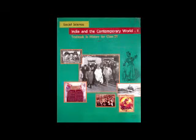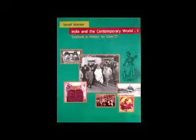France becomes a constitutional monarchy. The National Assembly completed the draft of the constitution in 1791. Its main object was to limit the powers of the monarch, separating powers and assigning them to different institutions — the legislature, executive and judiciary — making France a constitutional monarchy. The constitution of 1791 vested the power to make laws in the National Assembly, which was indirectly elected: citizens voted for a group of electors who in turn chose the assembly. Only men above 25 years of age who paid taxes equal to at least 3 days of a laborer's wage were given the status of active citizens entitled to vote.